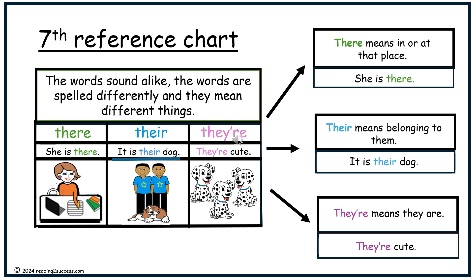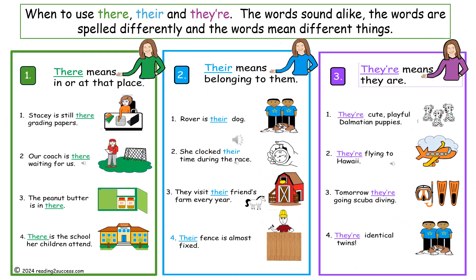Seventh reference chart. The words sound alike but are spelled differently and mean different things. There, their, and they're: the first, there, means in or at that place — she is there. The second, their, means belonging to them — it is their dog. And the third, they're, means they are — they're cute. This reference chart demonstrates four sentences showing how each word is used.